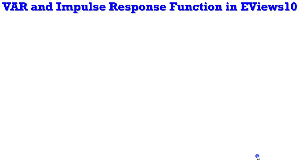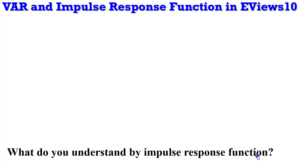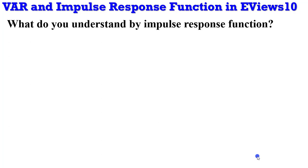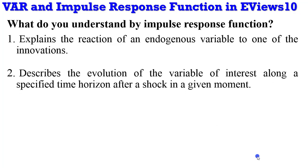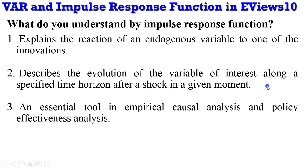Welcome back to Crunch Econometrics. In this video we shall be looking at VAR and impulse response function using EViews. An impulse response function can be explained as the reaction of an endogenous variable to one of its innovations. It describes the evolution of the variable of interest — the outcome variable — along a specified time horizon after a shock at a given moment. It is also an essential tool in empirical causal analysis and policy effectiveness analysis.